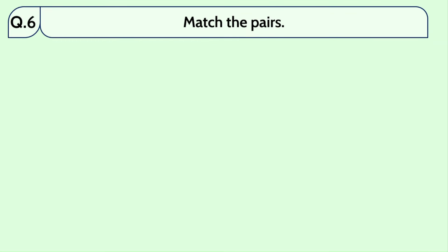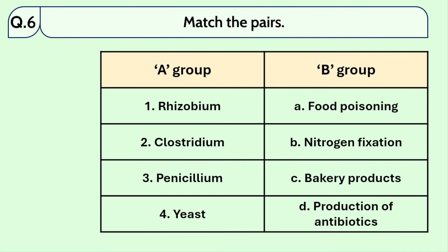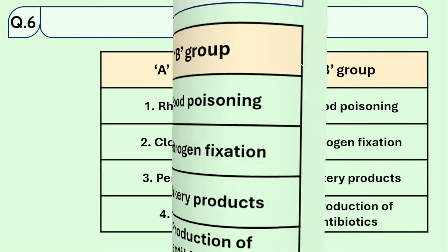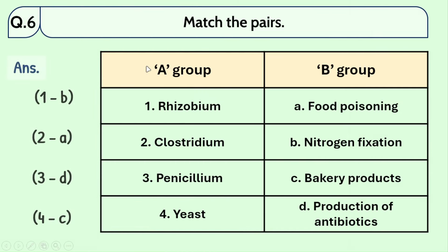Question number 6: match the pairs — Group A and Group B. The answers are: 1. Rhizobia — nitrogen fixation, as explained earlier. 2. Clostridium — poisoning. 3. Penicillium — production of antibiotics. 4. Yeast — bakery products.